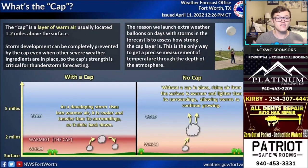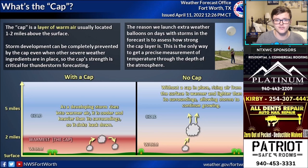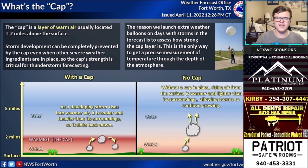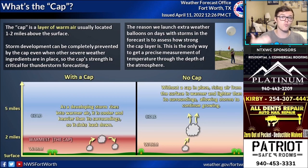What is the cap? This is a simplistic explanation of what the cap is and what role it plays in severe weather development. The cap usually develops about one to two miles up in the atmosphere. It's a thin layer of warmer air that will basically stop air parcels from rising higher up in the atmosphere.